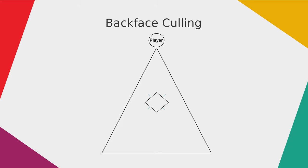If you have a correctly modelled 3D object, the normals should always face to the outside of the object, never to the inside. The backface culling algorithm always removes all polygons that have their normals facing away from the current camera view. In our example only 2 normals are facing away from the camera, and those 2 polygons are the ones not visible to the player anyway. So for this frame these 2 faces don't need to be rendered. This is why it's important that normals always face outward — if they face inward, the player will see through the polygon.